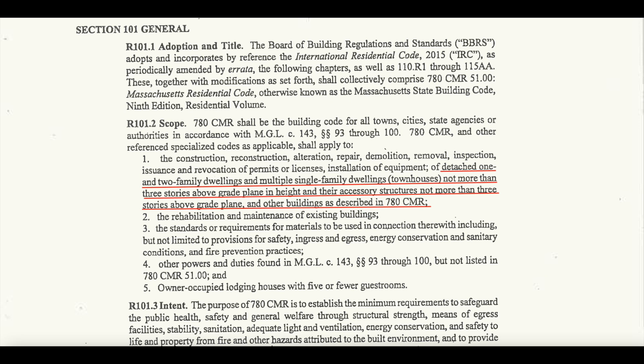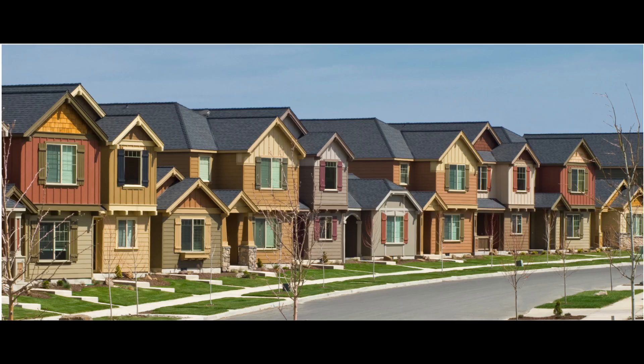Taking this a little further — if you want to take a deep dive — the one- and two-family dwelling category is not as cut and dry as you'd think. Reading from the Massachusetts one- and two-family amendments, the IRC pertains to detached one- and two-family dwellings and multiple single-family dwellings, which are townhouses (defined as three or more units), not more than three stories above grade plane in height. So the IRC applies to one- and two-family dwellings and townhouses — 1 to 100 units, regardless of how many are attached — as long as they are under three stories in height.